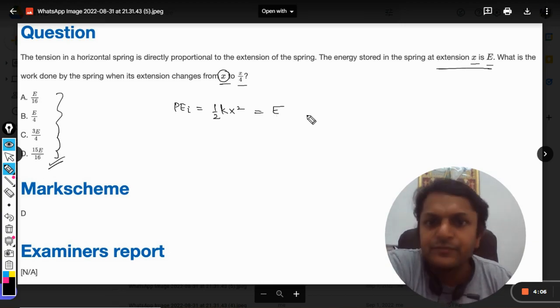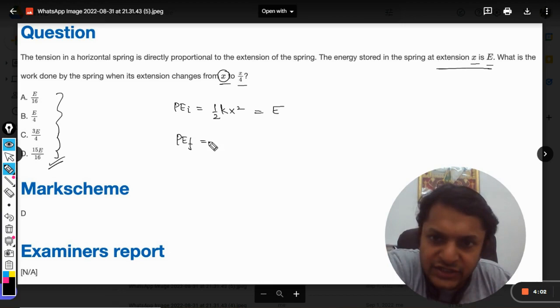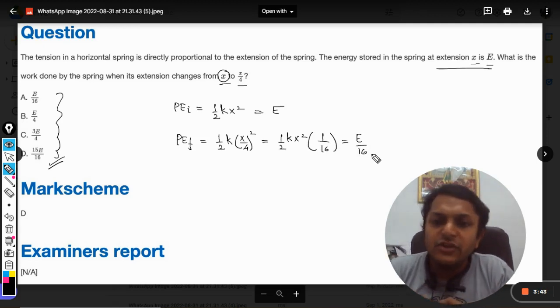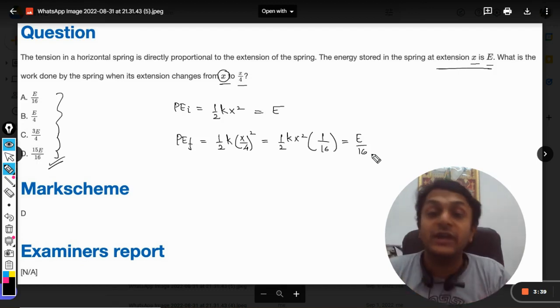Now what is the final potential energy? Final potential energy will be half k into x by four squared. This can be written as half k x squared into one by sixteen, which will become E by sixteen. So this is our total potential energy that will be stored in the spring when the extension is reduced from x to x by four.